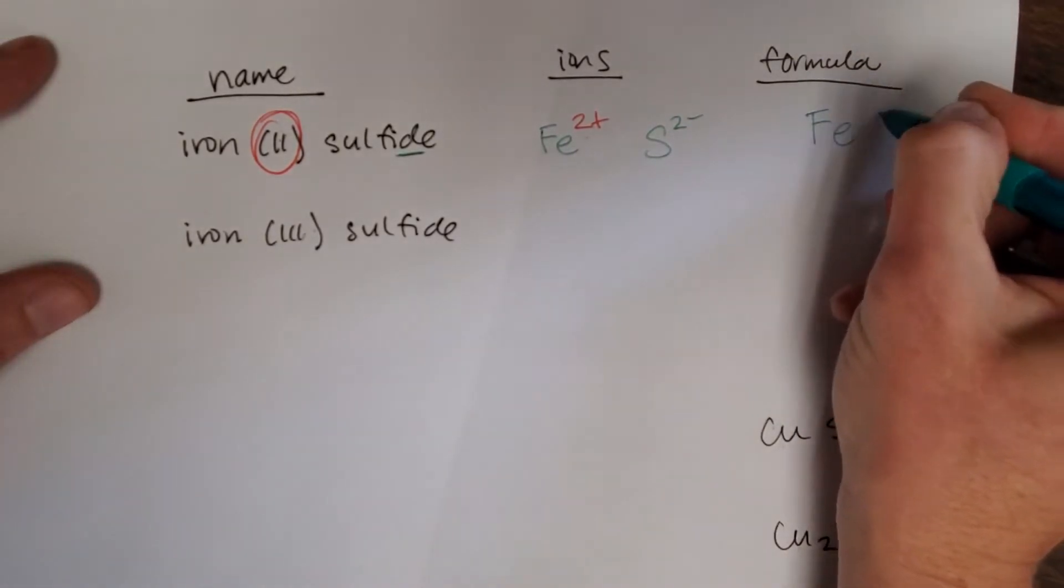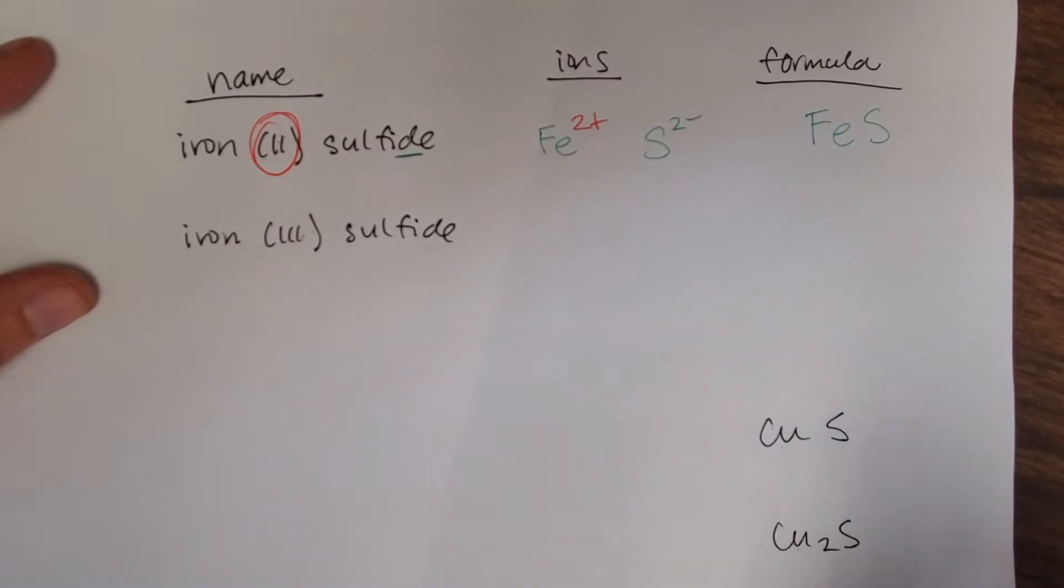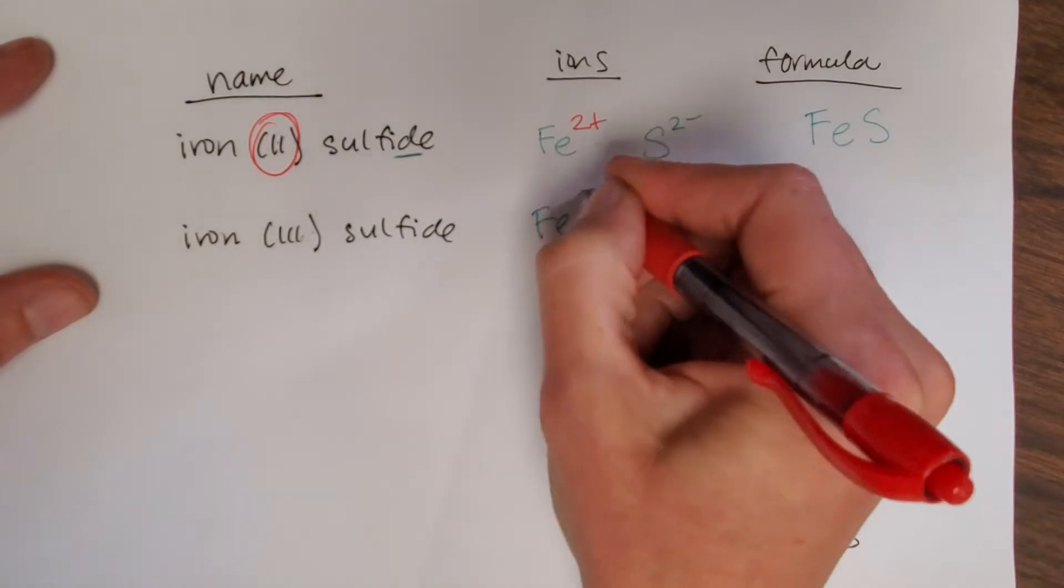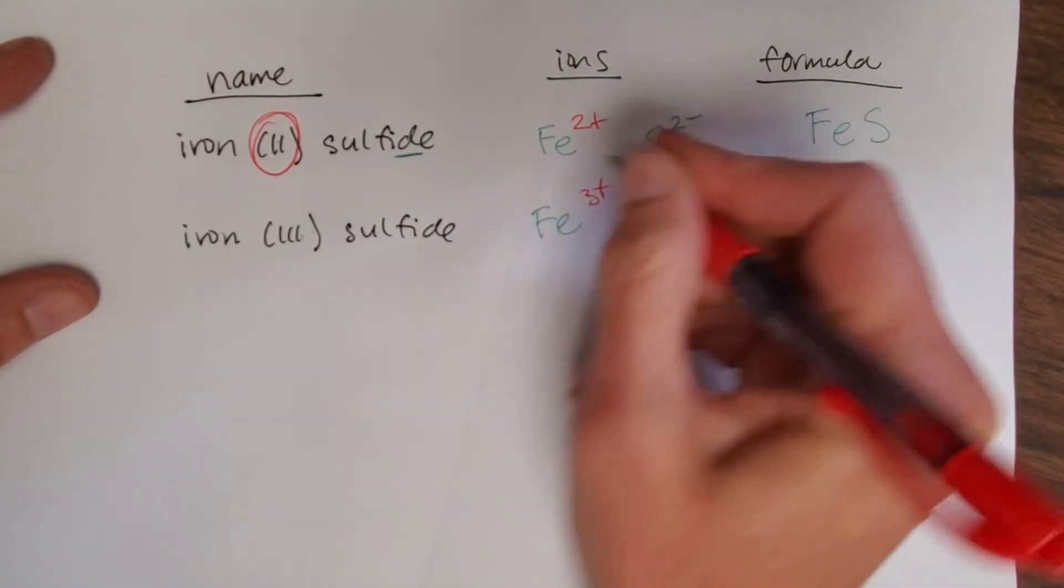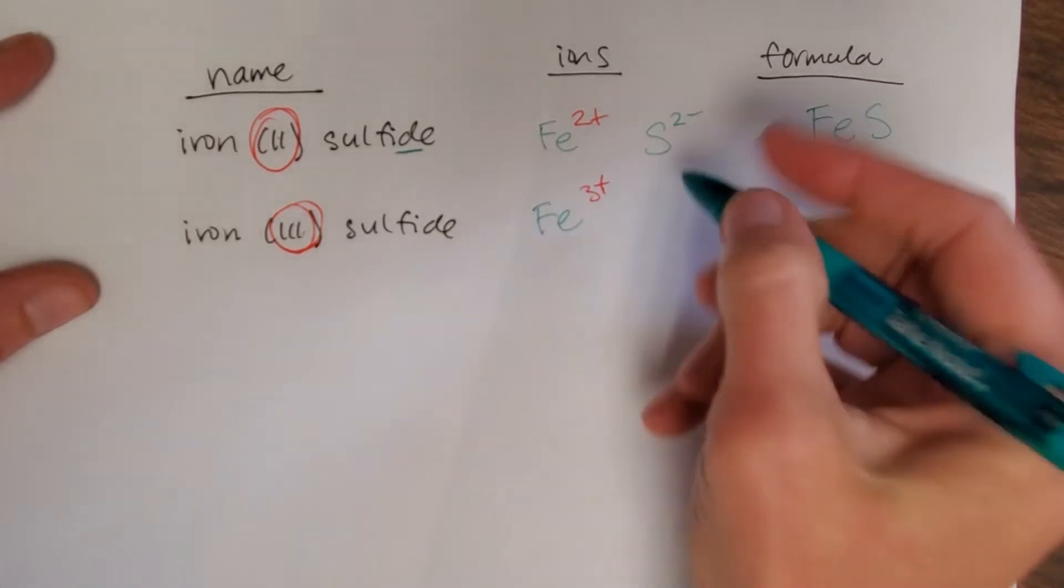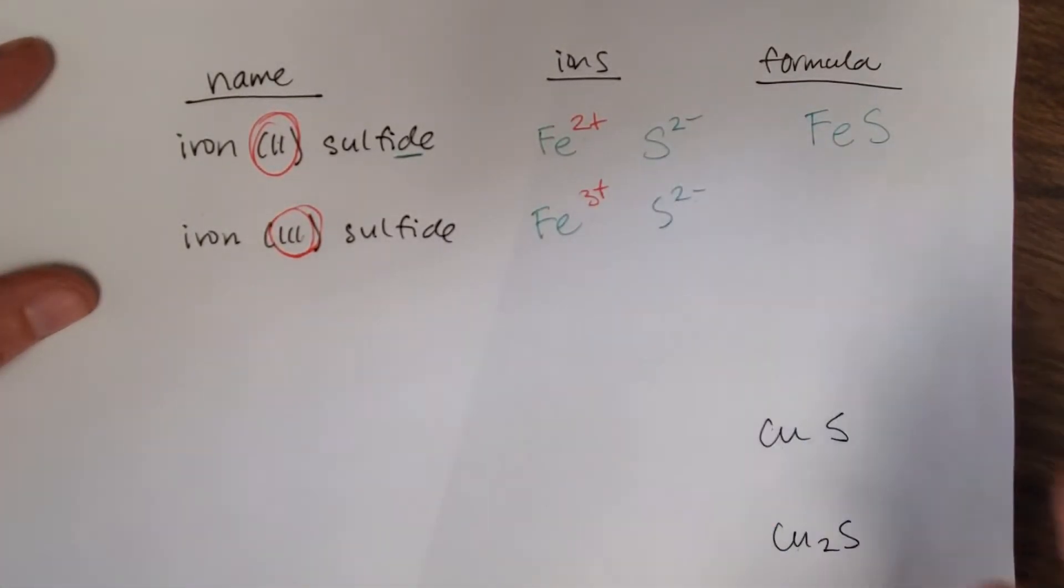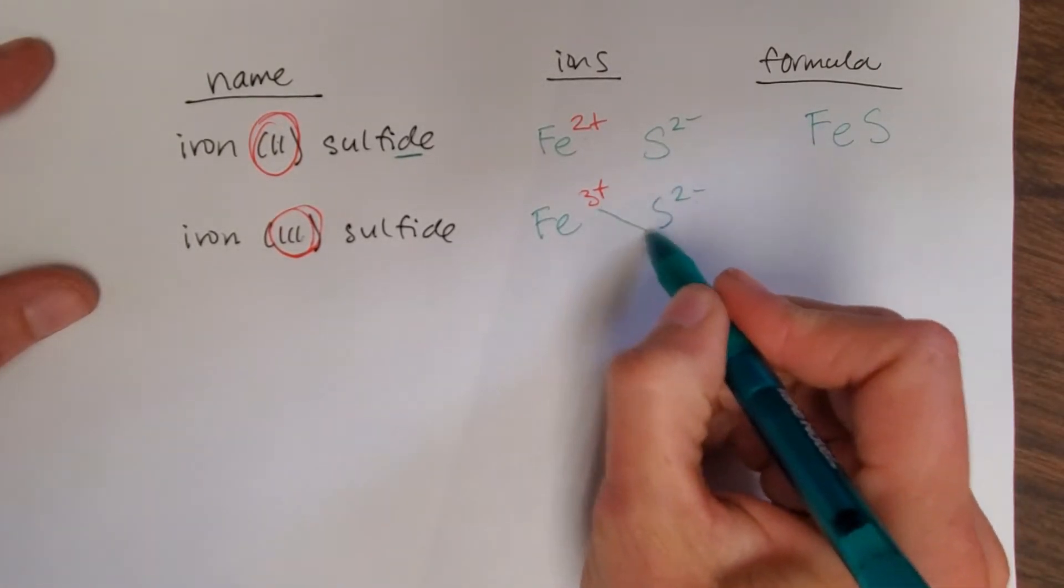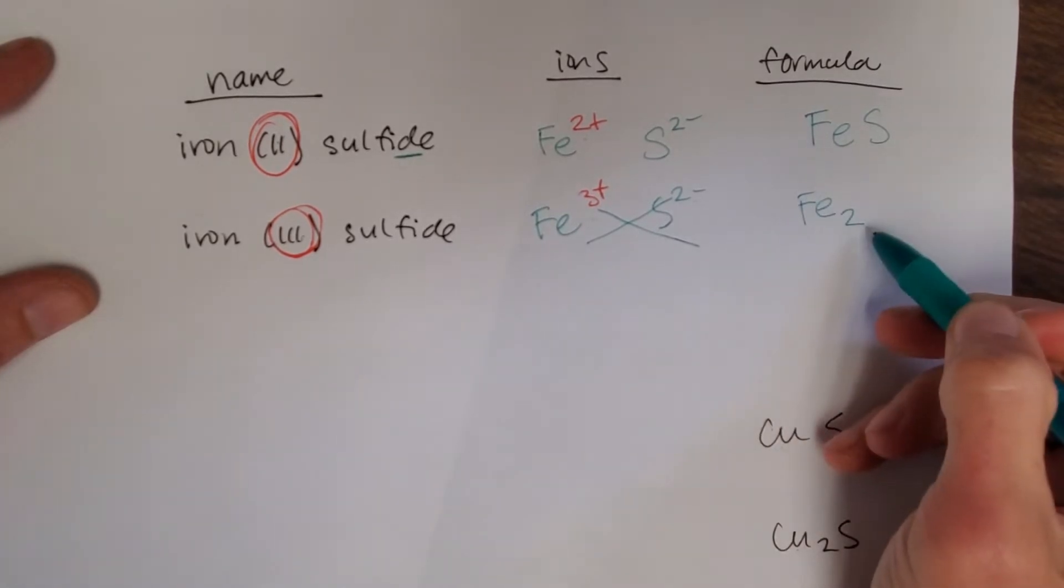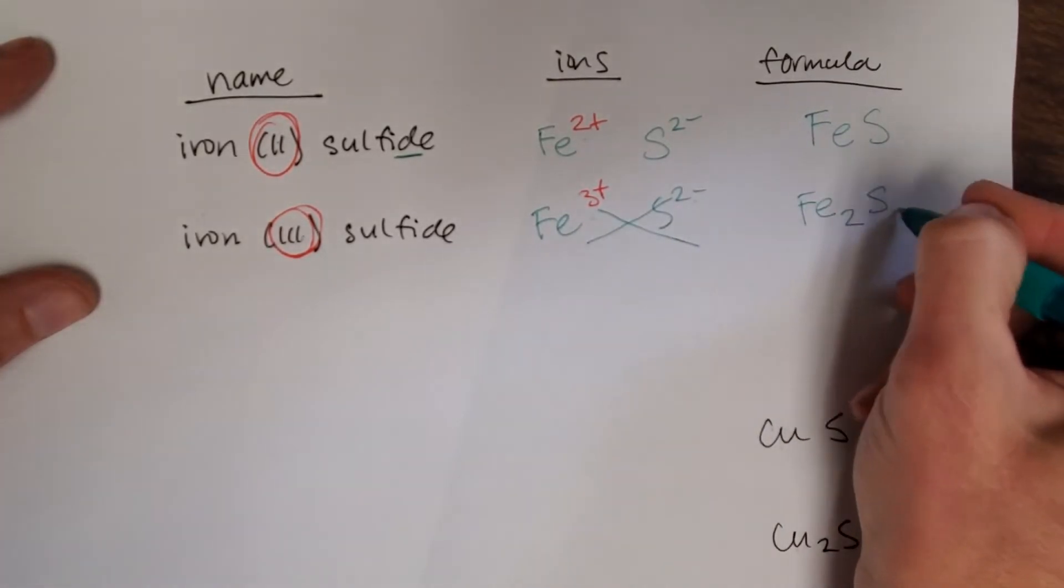Two plus, two minus comes together. Iron(III) now - we have iron with a 3+ charge because of this Roman numeral three here. Sulfide again, S²⁻. These don't match exactly, so I can't just put them together. What you can do is crisscross your charges, and so this would be Fe subscript 2, that's the number of iron atoms, and then S subscript 3.